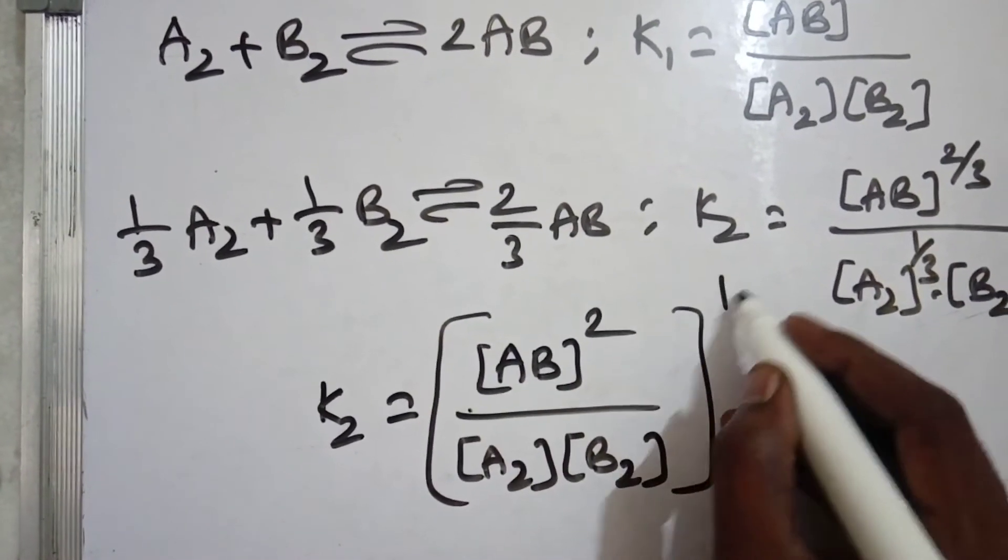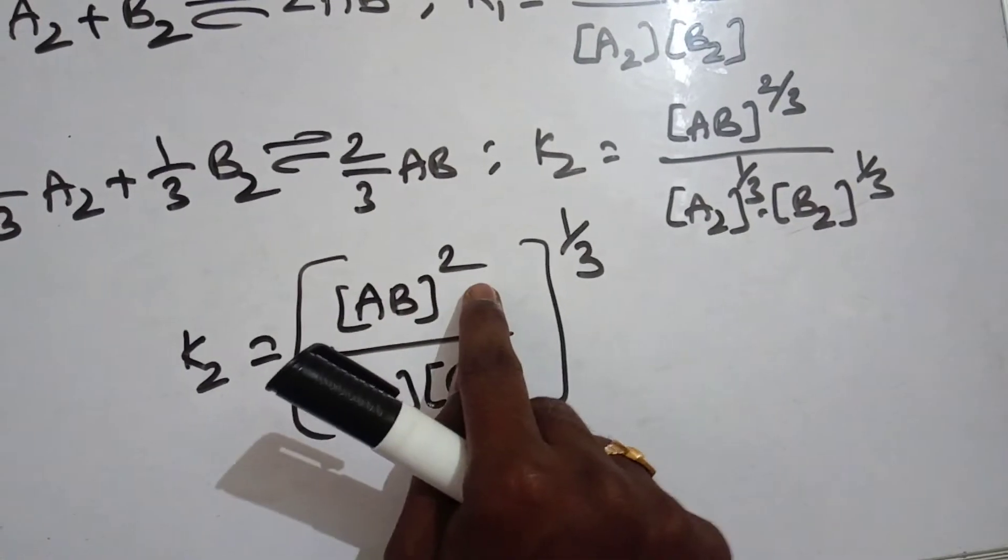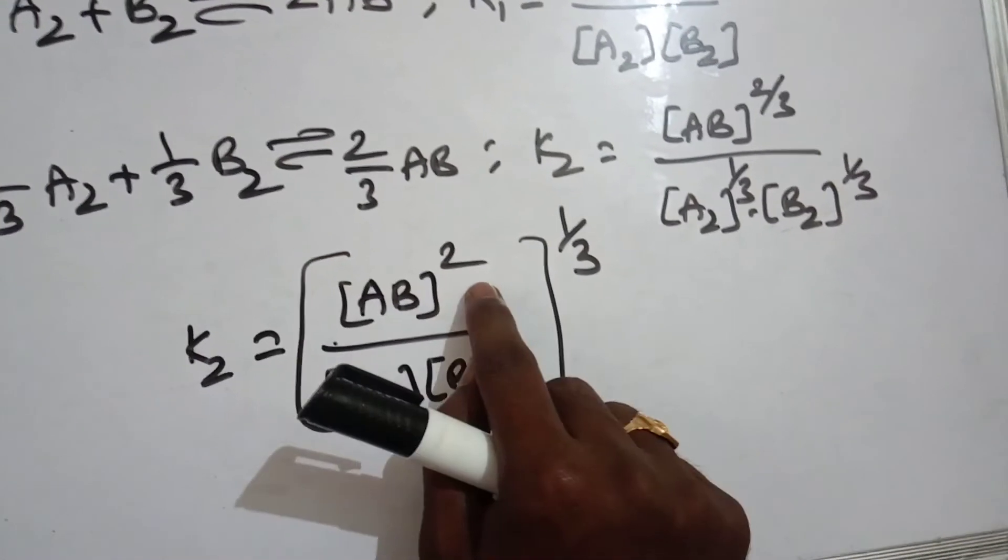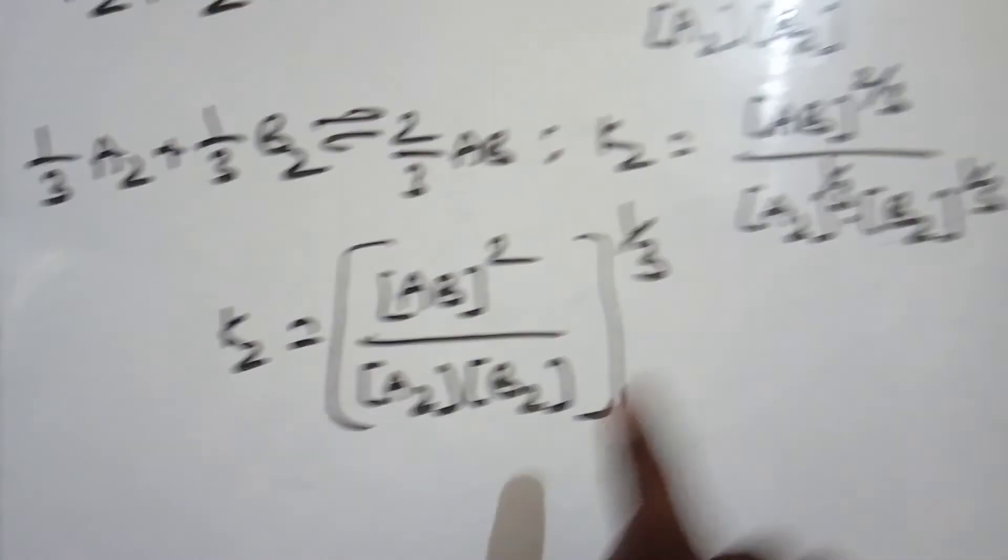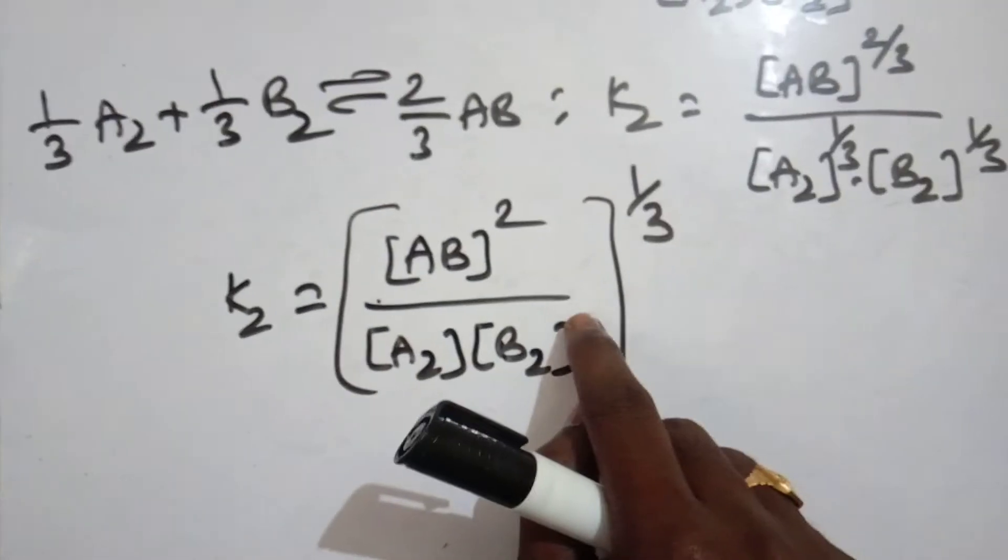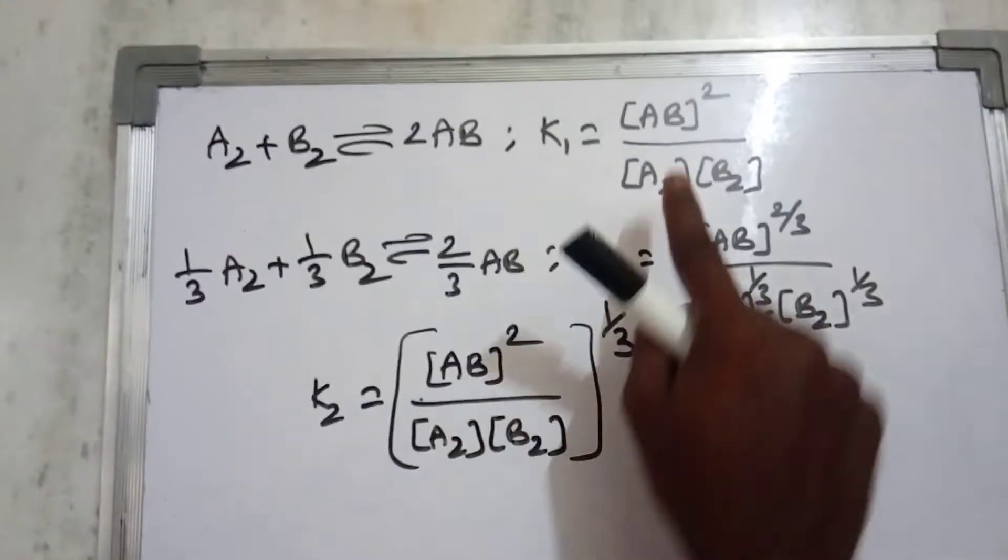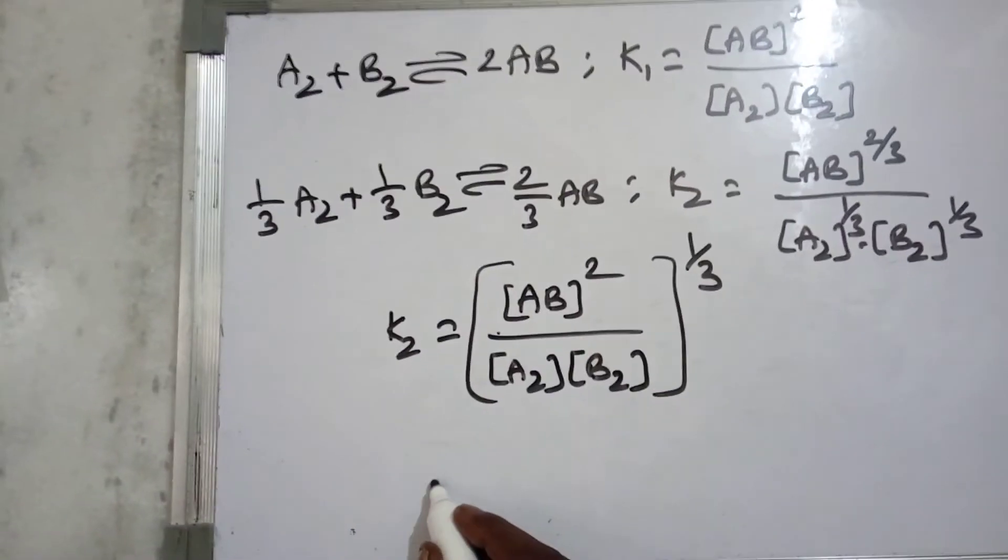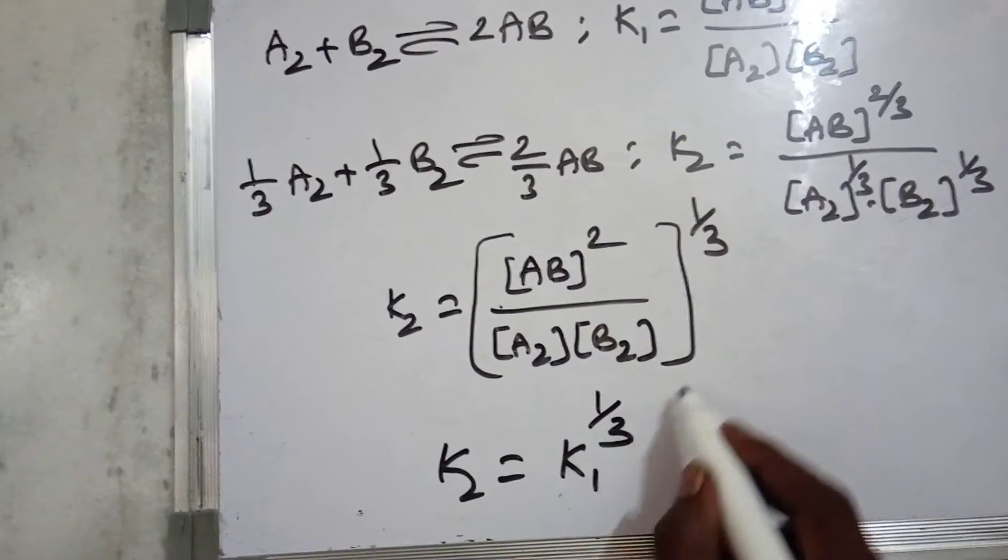When you have A power x raised to power y, it becomes A power x times y. So AB power 2 raised to power 1 by 3 means powers multiply: 2 into 1 by 3. Similarly for A2 and B2, each raised to minus power 1 by 3.